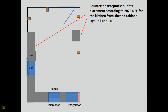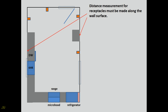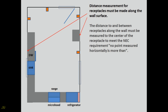Countertop receptacle outlet placement according to the 2020 NEC for the kitchen. Distance measurement for receptacles must be made along the wall surface, and the distance to and between receptacles along the wall must be measured to the center of the receptacle to meet the NEC requirement, such that no point measured horizontally is more than the specified distance.